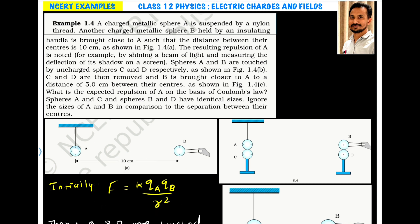Now, let us assume the resulting repulsion force is F. Sphere A and B are touched by uncharged spheres C and D respectively. What is happening here? An uncharged sphere C is brought in contact with A.